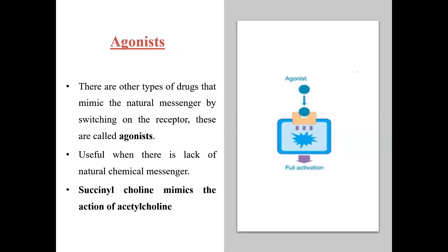Next is the agonist. An agonist mimics the action of acetylcholine. Succinylcholine is an example of an agonist. Succinylcholine binds on the binding site just like acetylcholine does, and then it activates the receptor the same way acetylcholine would — resulting in full activation. Succinylcholine is used as a skeletal muscle relaxant and as a general anesthetic.